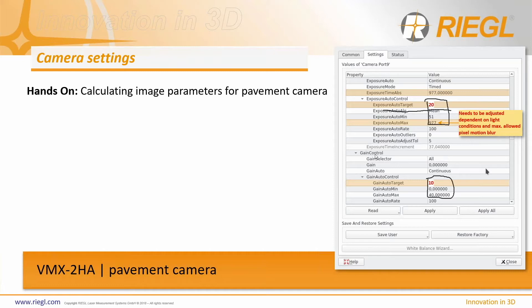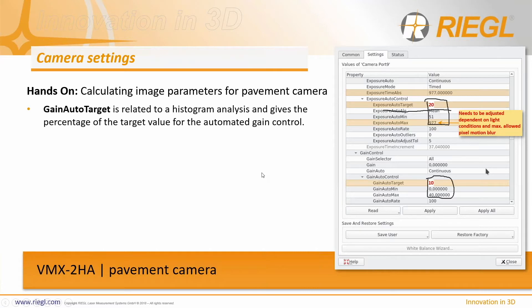The second tab is Settings. You can use this drop-down to read from each camera. In this case it's showing values from camera port nine. You have Apply and Apply All — apply to a single camera or to all cameras at once. If you have cameras on different sides of the vehicle you should try to apply it just to one camera at a time.